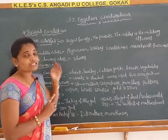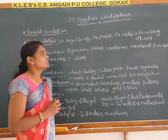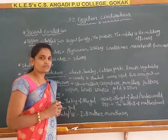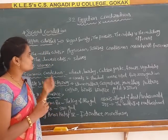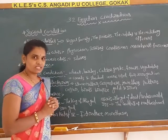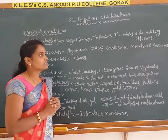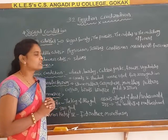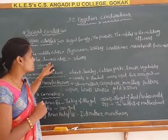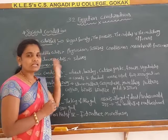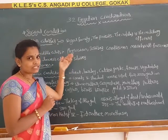The upper classes include the royal families, the trustees, the nobles, and military officers. The middle classes include physicians, craftsmen, scribes, merchants, and farmers. And in the lower classes lived the slaves.